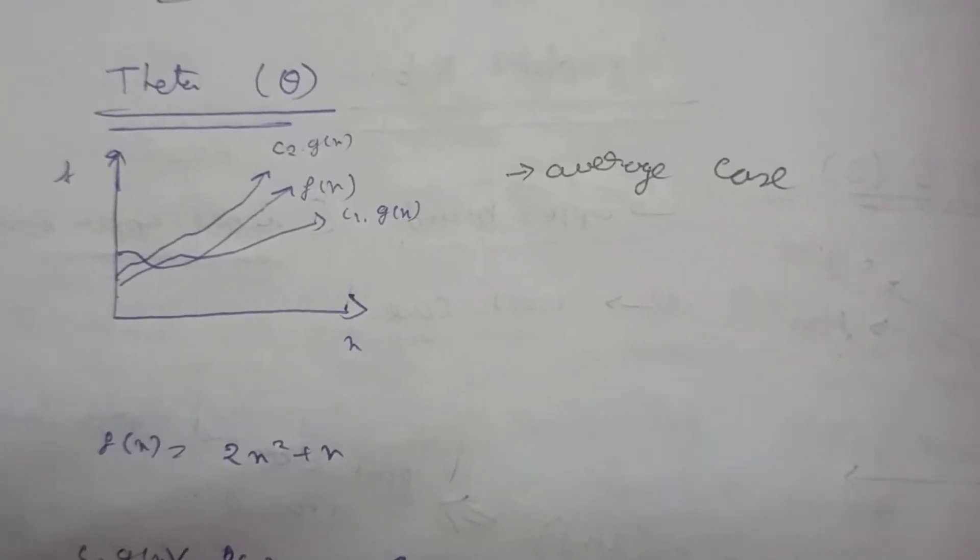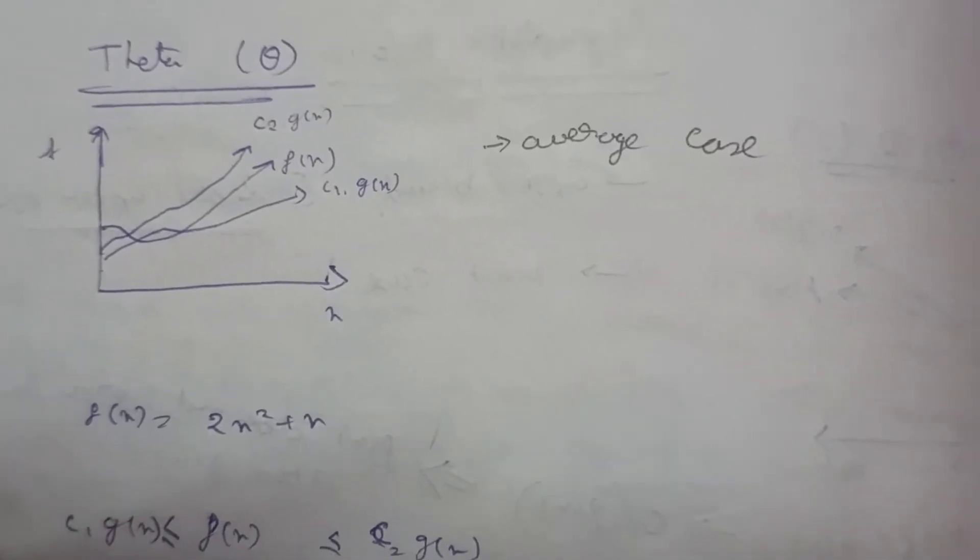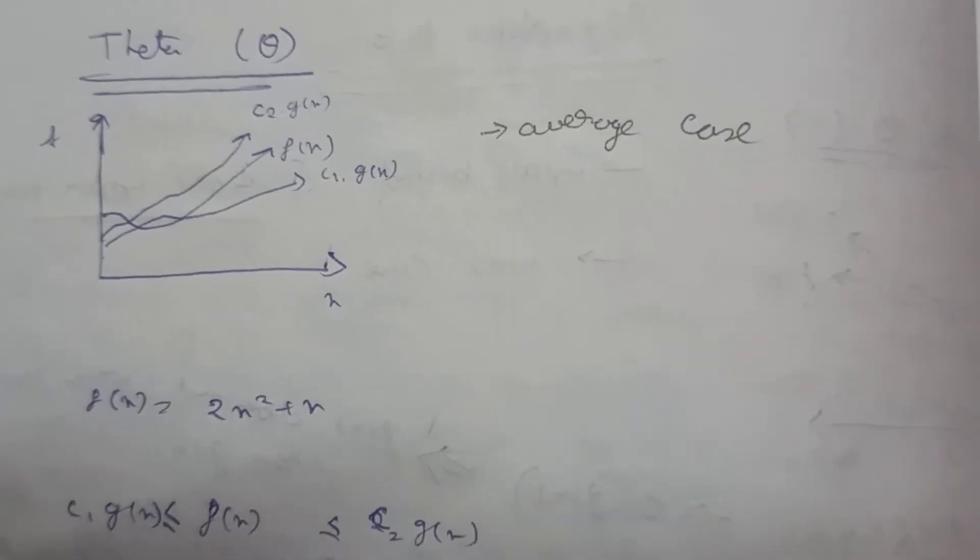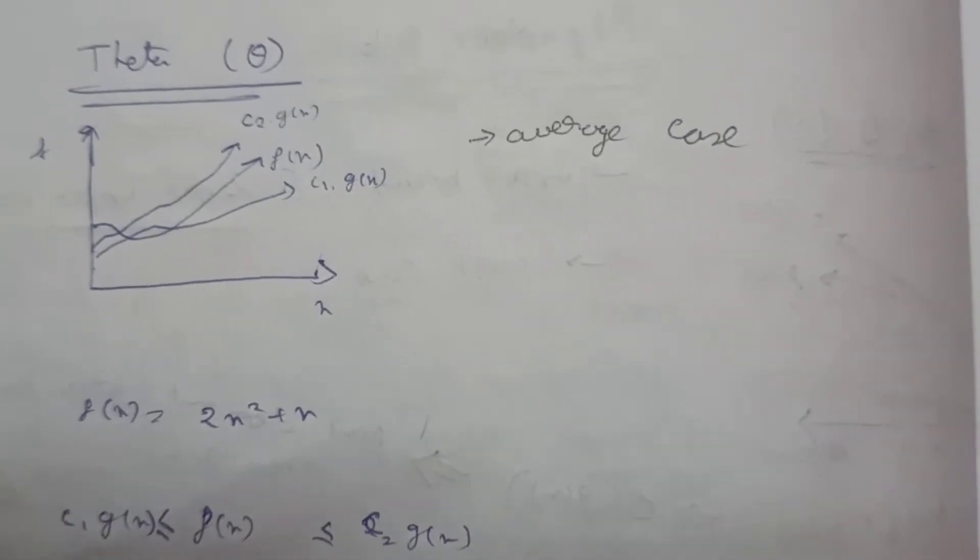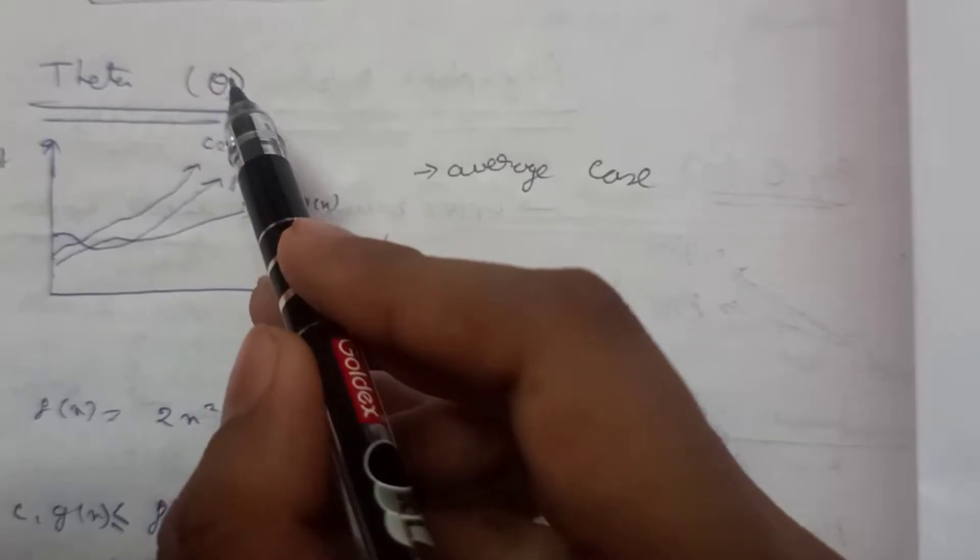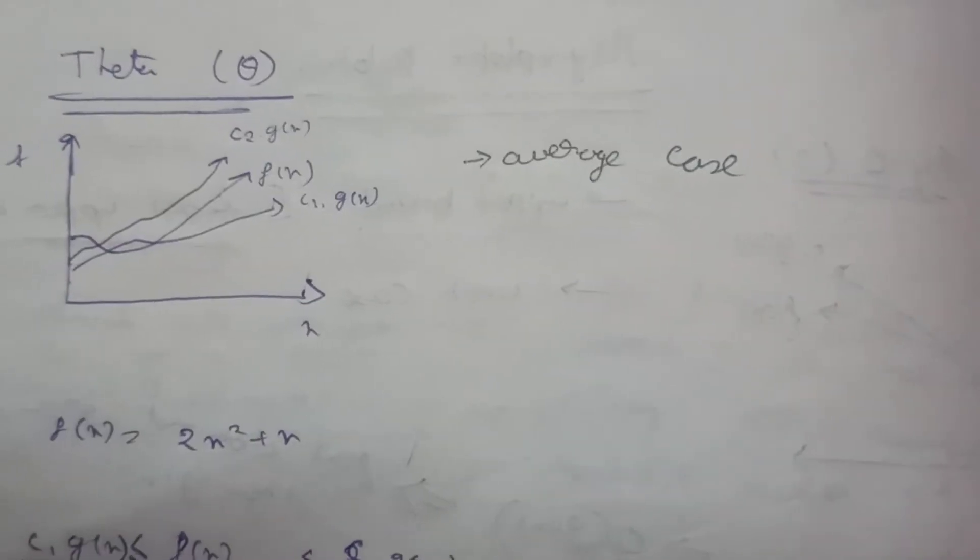Welcome to another lecture of our data structure playlist. We were studying about asymptotic notations and there is another one. So this is the theta notation and we write it like this, just like theta you already know.